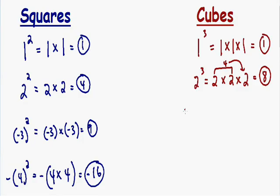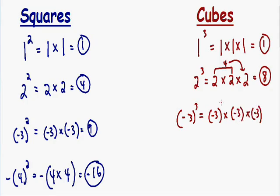Let's go over a negative number. Let's say we have negative 3 cubed. That means we take negative 3 and multiply it by itself 3 times: negative 3 times negative 3 times negative 3. Negative 3 times negative 3 gives us positive 9, and positive 9 times negative 3 gives us negative 27. So negative 3 cubed is equal to negative 27.